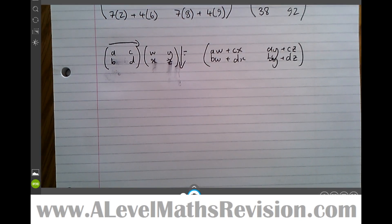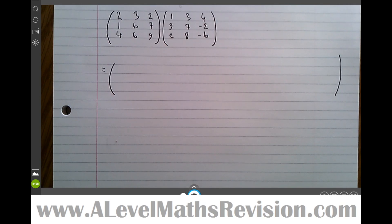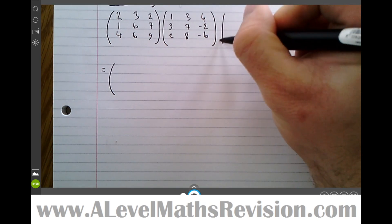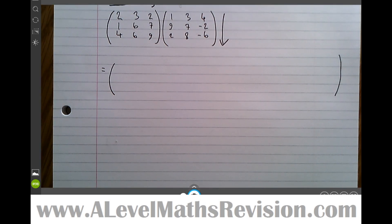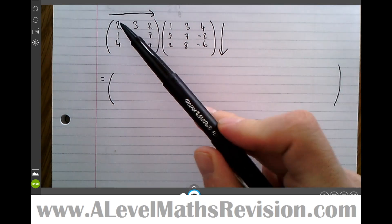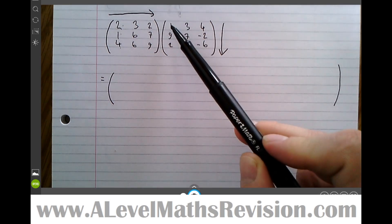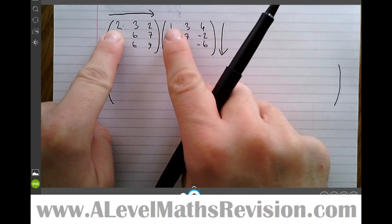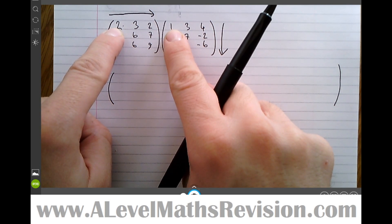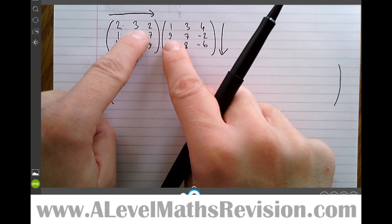Let's now look at a 3×3 matrix. We're multiplying (2,1,4 / 3,6,6 / 2,7,9) by (1,9,2 / 3,7,8 / 4,−2,−6). The same directional constraints apply: the first matrix we move left to right, the second top to down. We have a choice of starting top, middle, or bottom in the first matrix, and left, middle, or right in the second. Starting at the top of the first and the left of the second gives the top-left entry of the answer matrix.